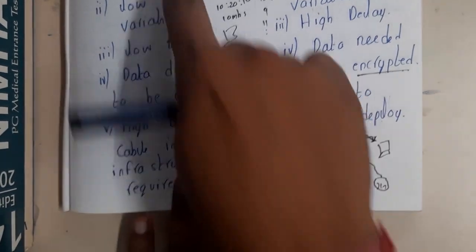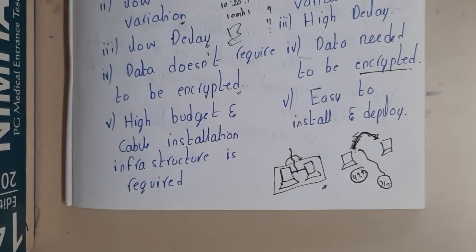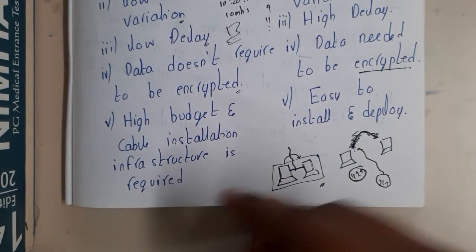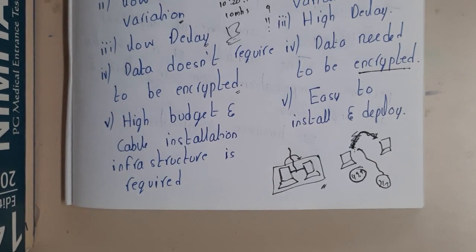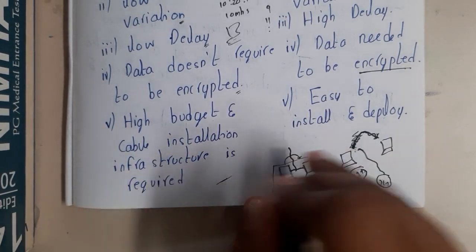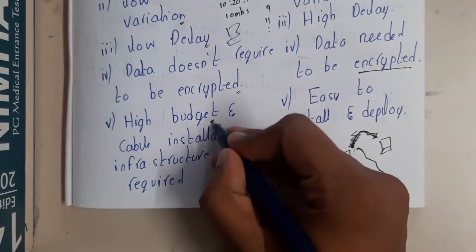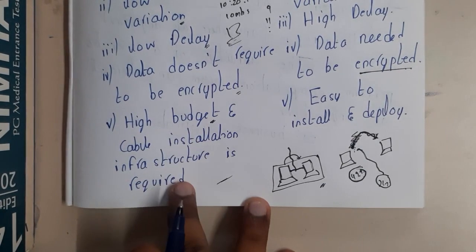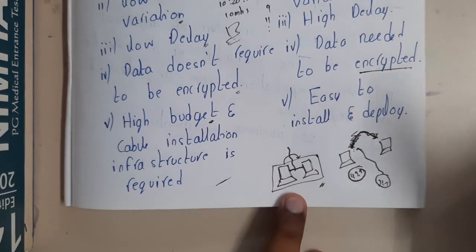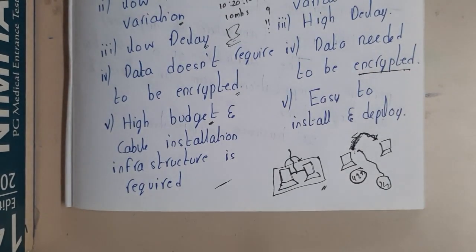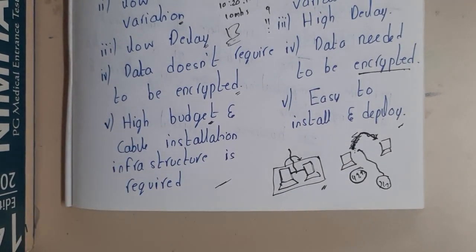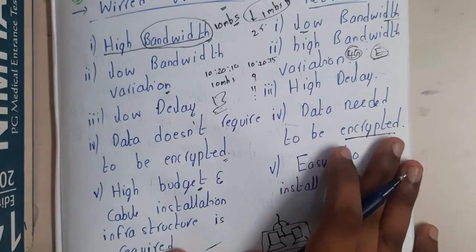A major disadvantage of wired is the budget and infrastructure. In a large organization, making everything wired takes significant budget and installation time. Whereas with wireless, you just buy a modem, connect to Wi-Fi, set a password, and you're done — it's fast to deploy and relatively cheaper compared to wired.